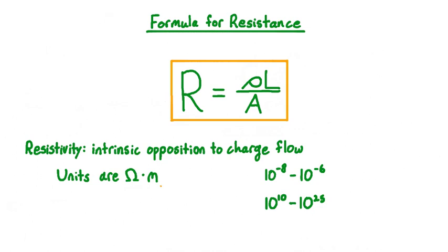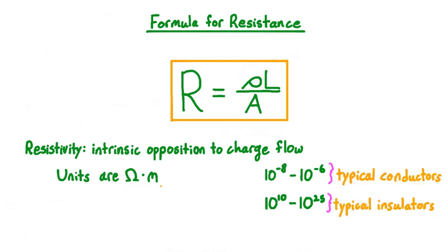Values for resistivity at room temperature actually range over more than 30 orders of magnitude. Resistivity between 10 to the negative 8th and 10 to the negative 6th ohm meters are typical of many metals and other good conductors, while resistivity between 10 to the 10th and 10 to the 25th ohm meters are typical of good insulators. Of course, there are many materials with resistivity in between these two ranges, such as many semiconductors which form the basis of most computing technology.